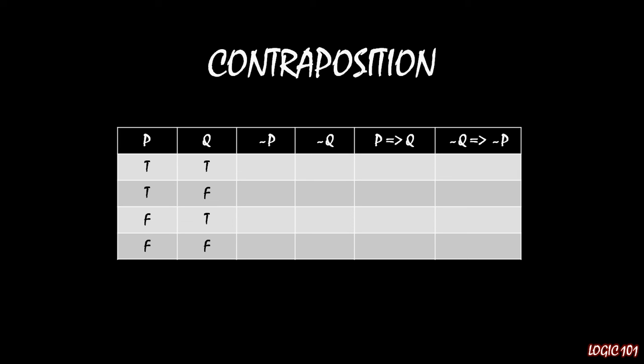In column three, we have not P, which is simply flip-flopping the truths and falses of the first column. So instead of having true, true, false, false, we have false, false, true, true. And for not Q, we're doing the same thing with the second column. So in the second column, we had true, false, true, false. Here we have false, true, false, true. We just switched true with false and false with true.